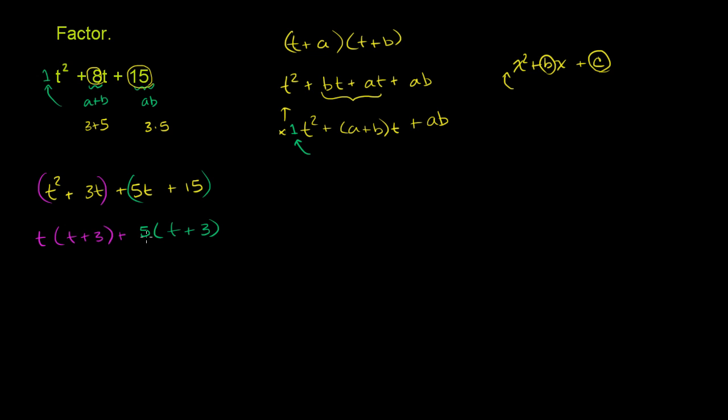5t divided by 5 is t, 15 divided by 5 is 3. And now you can factor out a t plus 3. You have a t plus 3 being multiplied times both of these terms. So let's factor that out. So it becomes t plus 3 times t plus 5.